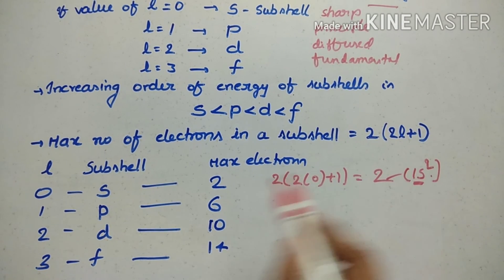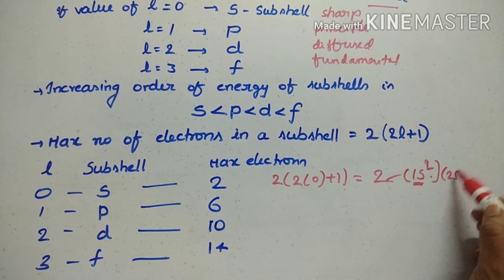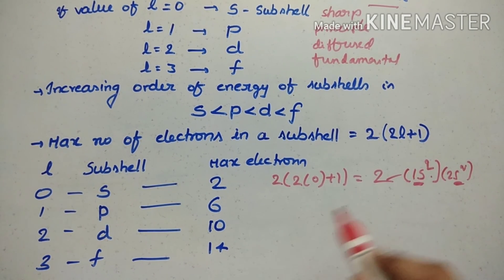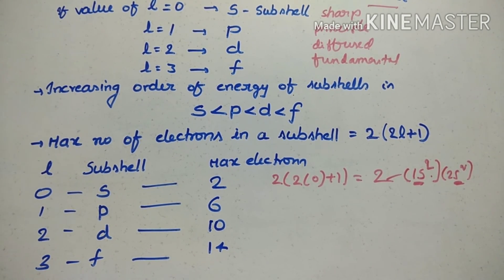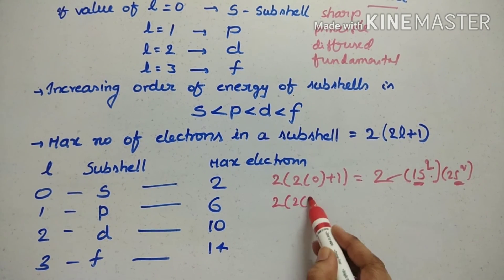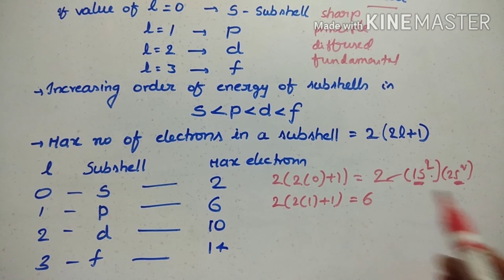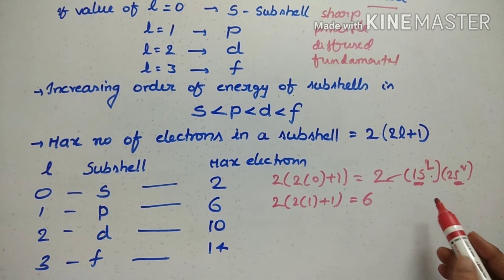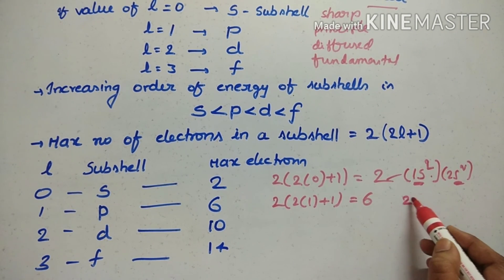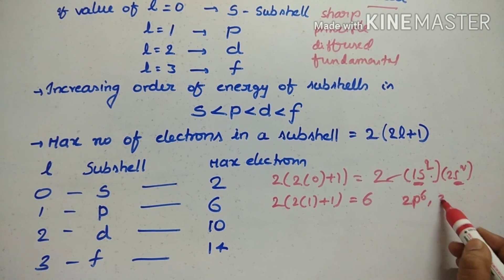If l equals 1, the subshell is named p. The maximum number of electrons in p is calculated as 2 times (l plus 1) times (l plus 1) — using the formula 2(2l+1), giving 6 electrons. So we have 2p6, 3p6, and so on.